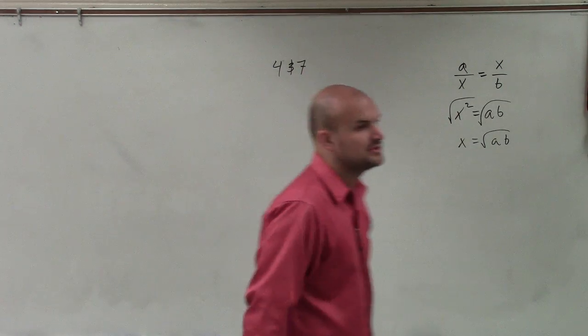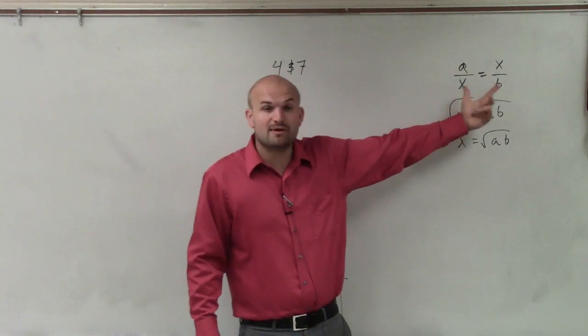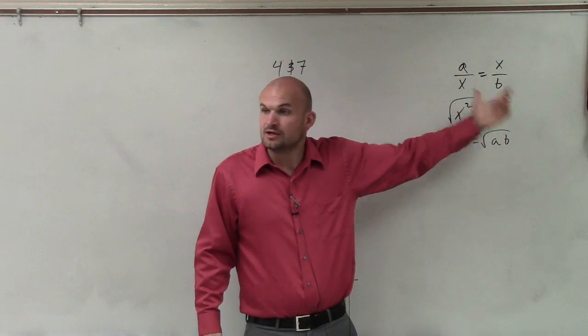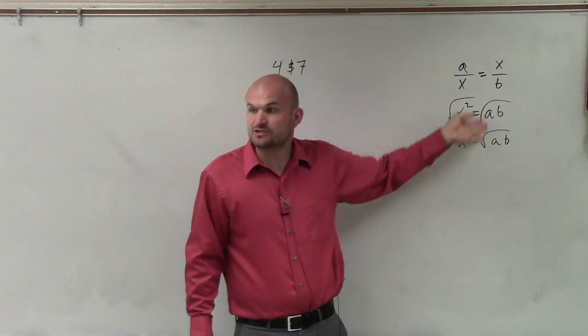So if I was going to find the geometric mean between 4 and 7, what I've already previously talked to you guys about is the geometric mean is when your means are exactly the same. So the geometric mean is going to be the product of your extremes, which would be A and B. But it's not going to just be the product. It's going to be the square root of the product.